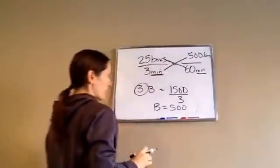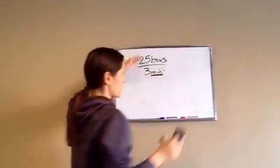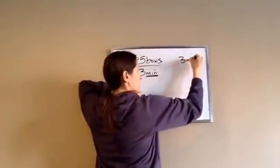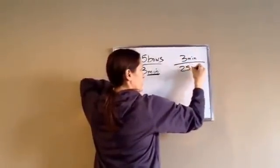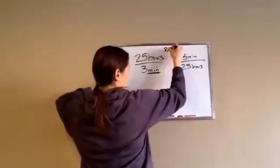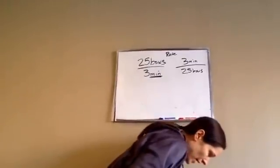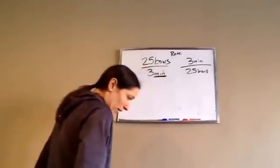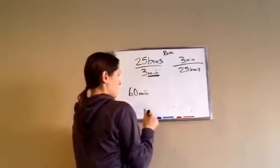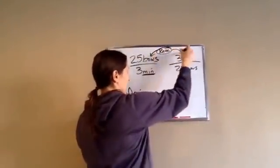Now, there's another way that you can work this, and I want you to see that this is a rate. 25 bows in 3 minutes, or you can say in 3 minutes, she can do 25 bows. That's a rate. Now, here's the question. They want us to know how many bows she can tie in 1 hour, which is 60 minutes. So we're going to take 60 minutes and multiply it by the rate that we want, either this one or this one.